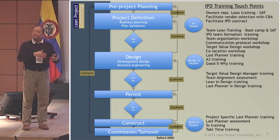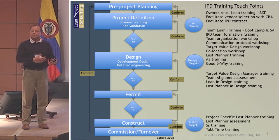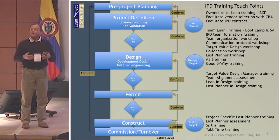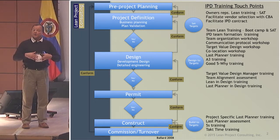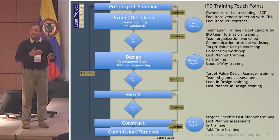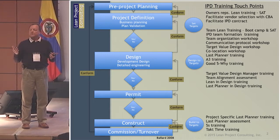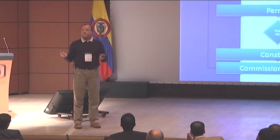The architect does what they've traditionally done — they become the translator of the owner's value proposition in the context of the construction world. They go into what constitutes design: SDs, DDs, schematic designs, design development, and then construction documents. In the case of the Cathedral Hill Hospital in downtown San Francisco, a $1.8 billion project, they did exactly that, and it was a $43 million feasibility study.